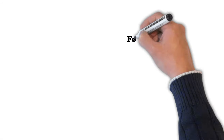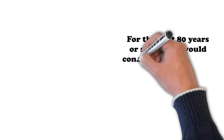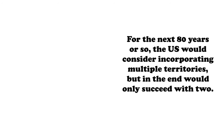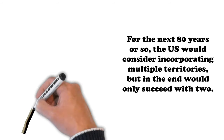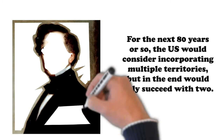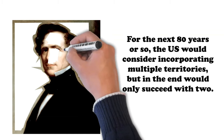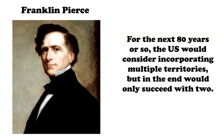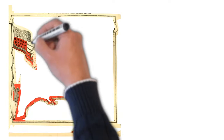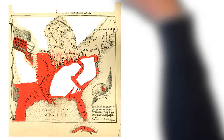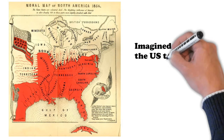For the next 80 years or so, the U.S. would consider incorporating multiple territories but in the end would only succeed with two. Before 1860, these were largely machinations related to the balance in the Senate between free and slave states. The most important was the proposed annexation of Cuba, which got the furthest during the Franklin Pierce administration — in 1854, the U.S. Secretary of State met with several European foreign ministers to discuss the possibility of a sale, but these deliberations became public and the subsequent outcry in the North killed the possibility.